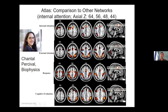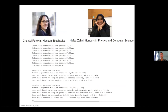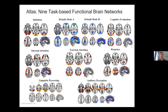Todd briefly describes a network classification tool developed by research assistants Chantal Percival and Hafsa Zahid in MATLAB. It classifies a new network into one of nine identified template networks by computing positive and negative loadings and returning a z-score reflecting the degree of match — for example, a z-score around 2 corresponds to a correlation of approximately 0.8.